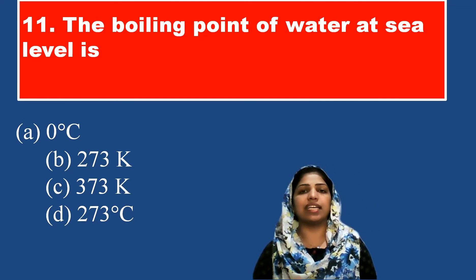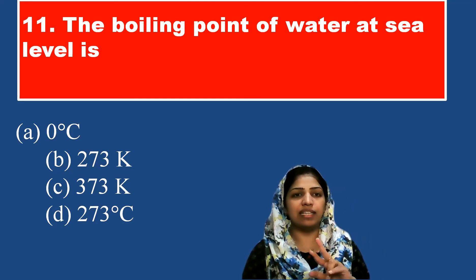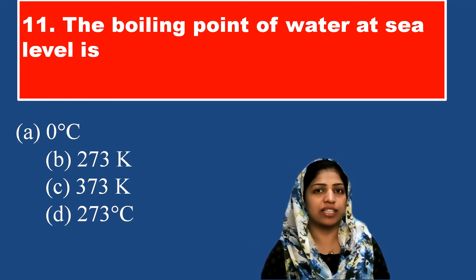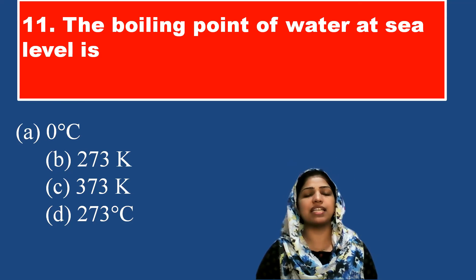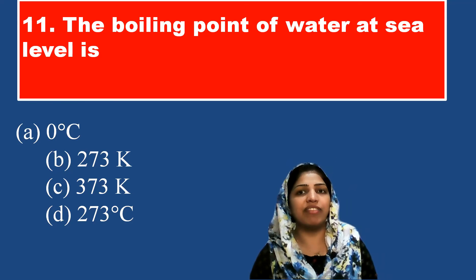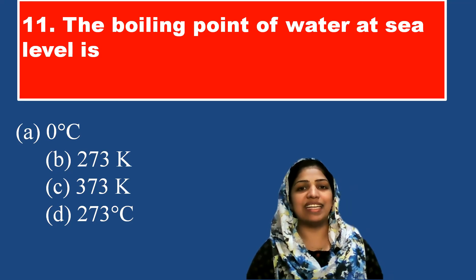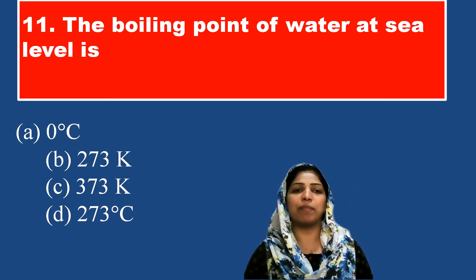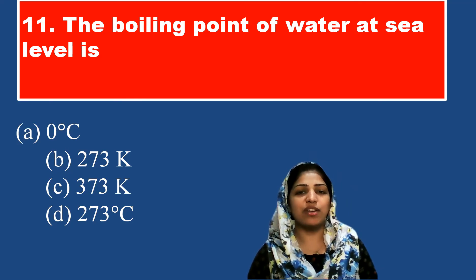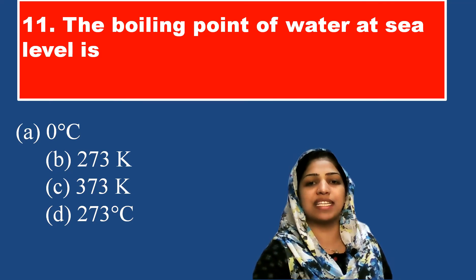If we convert 100°C to Kelvin, we add 273, giving 373 Kelvin. So the boiling point of water at sea level is 373 Kelvin. Option C with 373 Kelvin is correct.